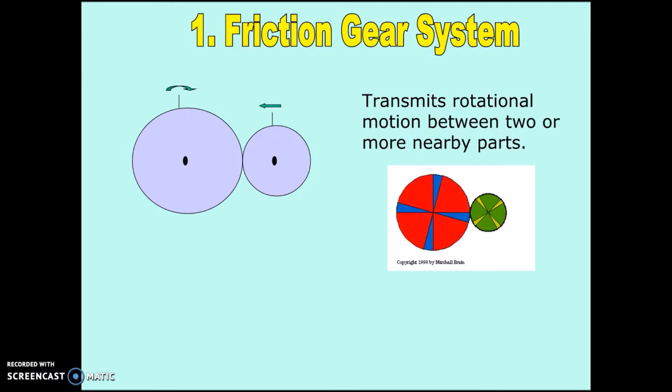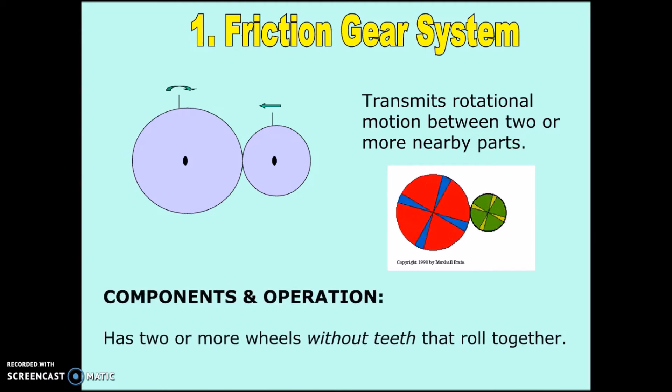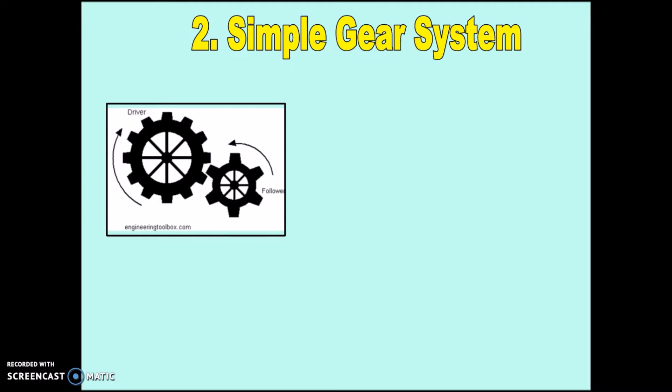In a friction gear system, you have two very important components. They're called wheels. It has at least two or more wheels without teeth that roll together. They work using friction. Each wheel goes in a different direction than the other one. So one is going clockwise and one is going counterclockwise. They transmit rotational motion between two or more nearby parts.